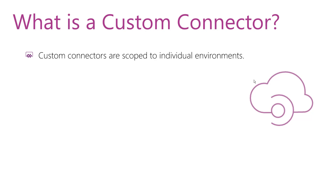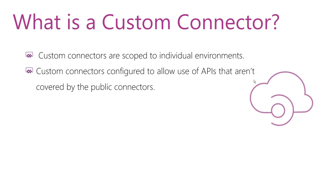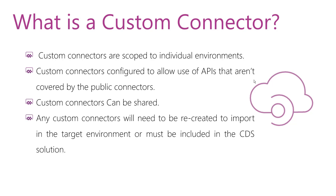Custom connectors are scoped to individual environments. This means they are configured in the context of one environment and must be added to each environment to use them, so they are only available to apps and flows within that environment. Custom connectors are configured to allow use of APIs that aren't covered by public connectors. Custom connectors can also be shared so other users in your organization can consume them, and when exporting an app from the source environment to the target environment.